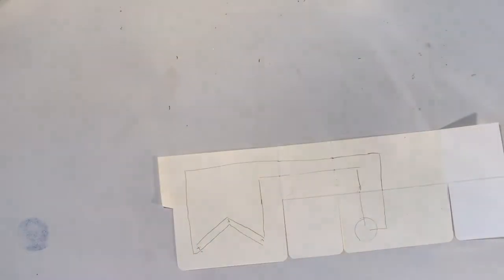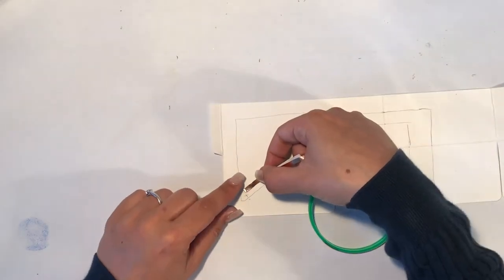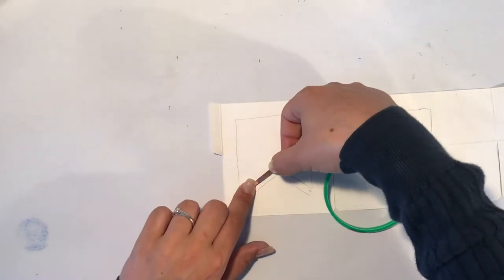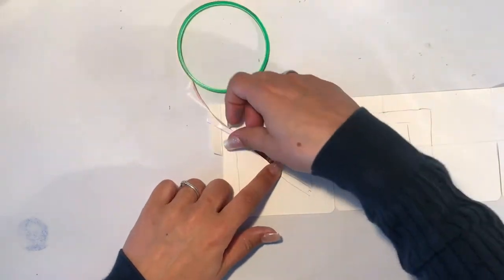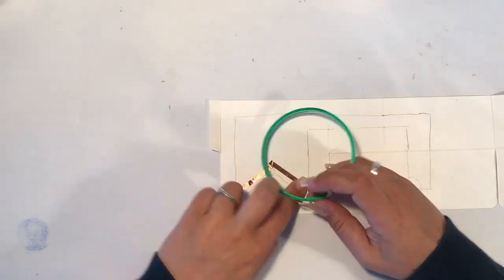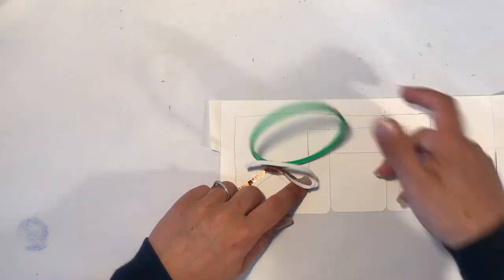Now that everything is drawn in I just need to put my copper tape on my panel. For the edges I just bend it forth and back and get good lines without tearing my copper tape.